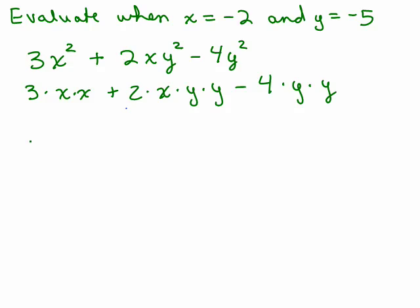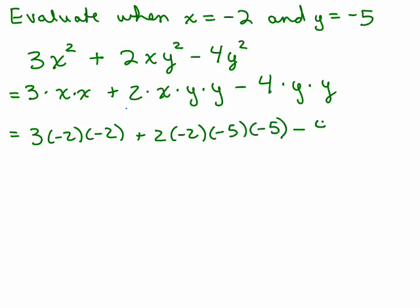Now you replace the variables with the correct numbers. So we have 3 times negative 2 times negative 2 plus 2 times negative 2 times negative 5 times negative 5 minus 4 times negative 5 times negative 5.